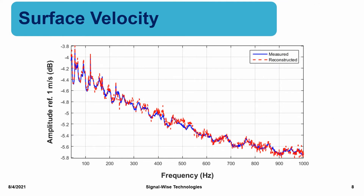Next, we demonstrate the comparison of the measured normal surface velocity spectrum versus the reconstructed one. Once again, satisfactory agreement is obtained. Notice that the amplitudes of the normal surface velocities decay drastically over frequencies and resonances occur primarily at lower frequencies. These results further prove that dishwasher noise is structure-borne.